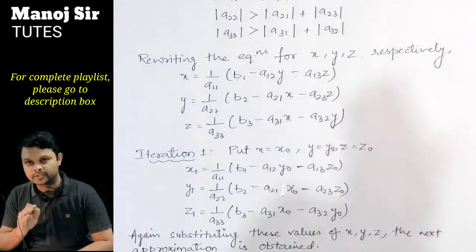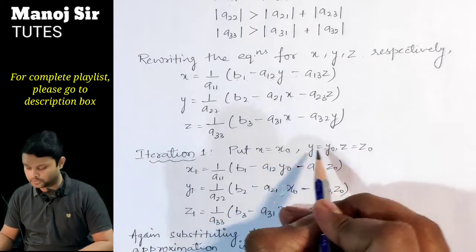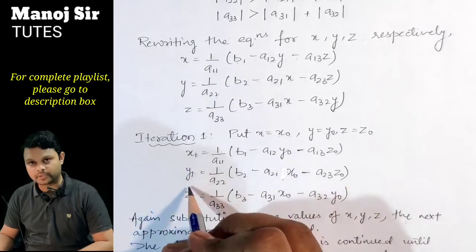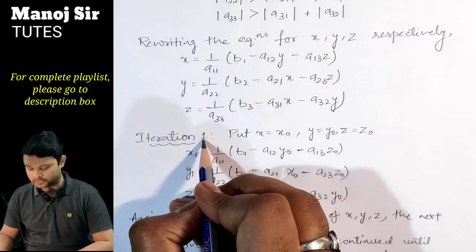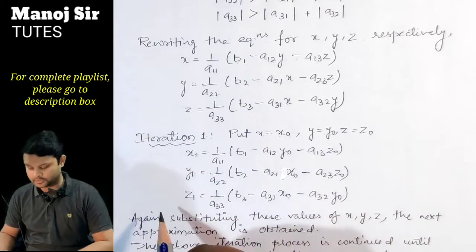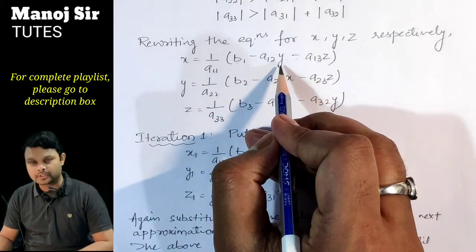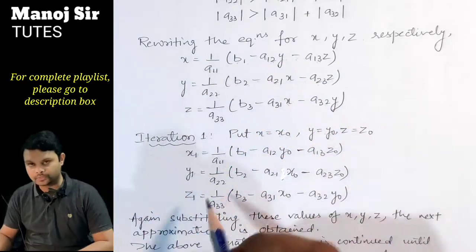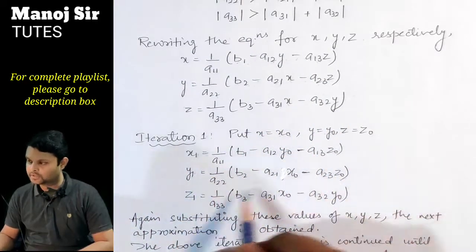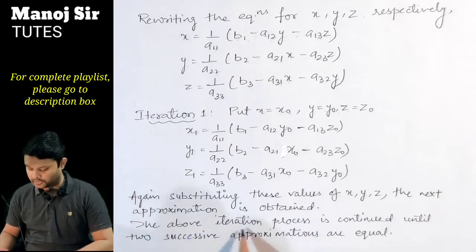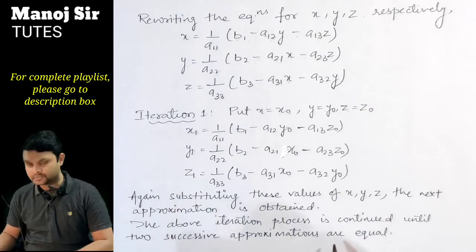If initial values are not given, we consider x0 = 0, y0 = 0, and z0 = 0. To find the first approximation values x1, y1, and z1, we substitute subscript 1 on the left side and subscript 0 on the right side, giving y0, z0, x0, z0, and x0, y0 respectively. We then substitute these values to get the next approximation. This iteration process continues until two successive approximations are equal.